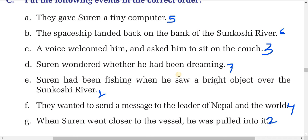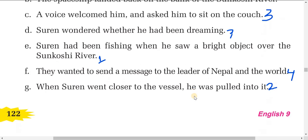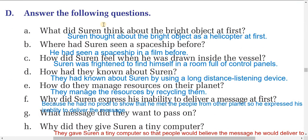Now let's do the next exercise — answer the following short answer questions. A: What did the student think about the bright object at first? The student thought the bright object was a helicopter at first. B: Where had the student seen a spaceship before? The student had seen a spaceship in a film before.